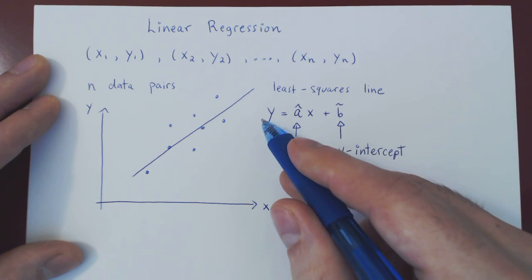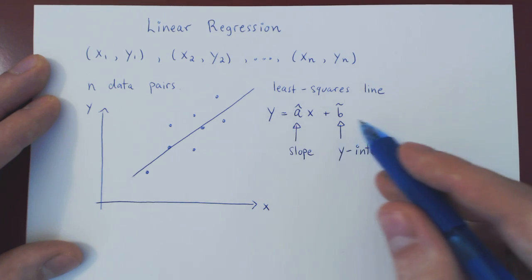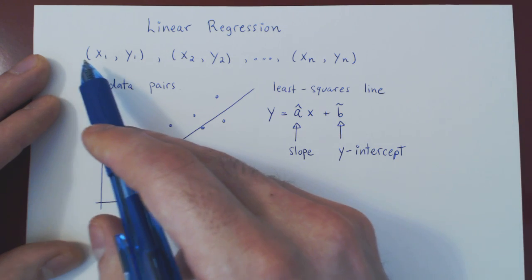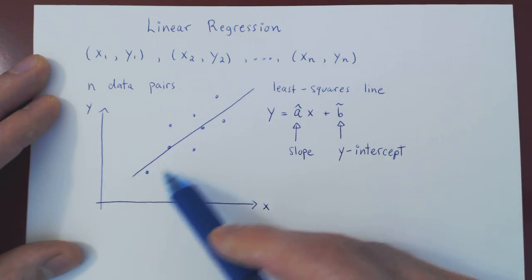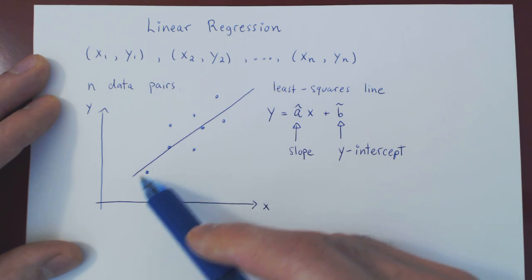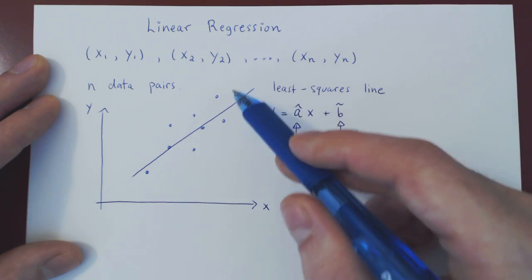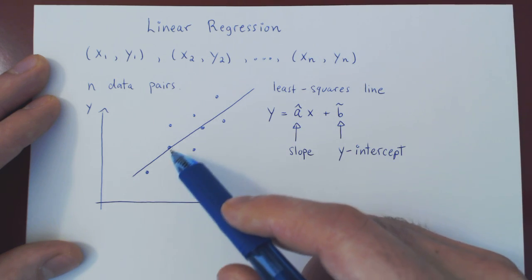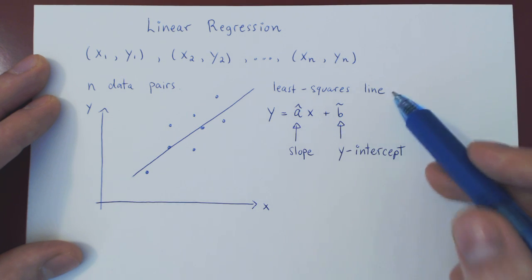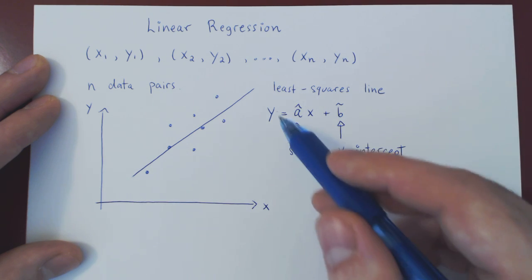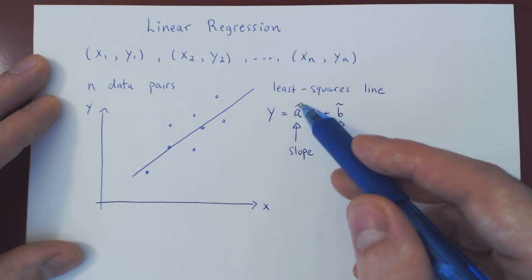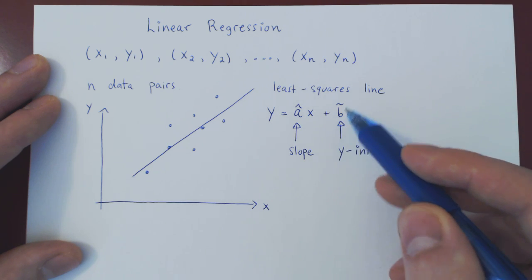So this is the first thing we're going to find when we discuss linear regression. You have a set of n data pairs, you look at the scatter plot, and the line that passes through the scatter plot closest to all the points on average is the line of least squares. It has a linear equation in the form y equals â·x plus b̂.